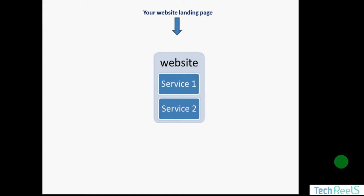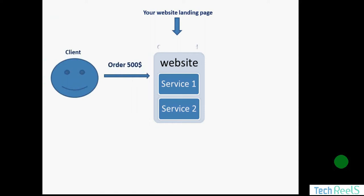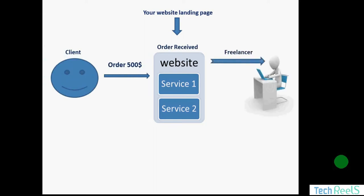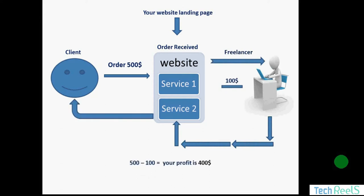The services you provide on your website could be about anything — for example, creating websites, building apps, designing logos, video animations for advertisements, video editing, graphic designing, etc. When a client lands on your website and orders a service — let's say a $500 service — you take the order details and send it to a freelancer on Fiverr, Upwork, or Freelancer. The freelancer does the job for $100, you forward the completed project to your customer, pay the freelancer $100, and the remaining $400 is your profit.